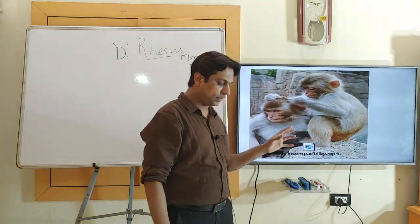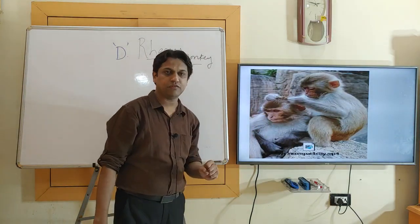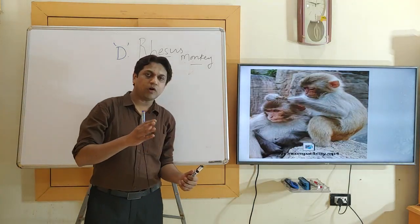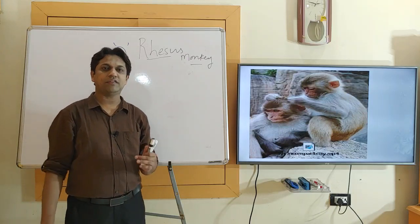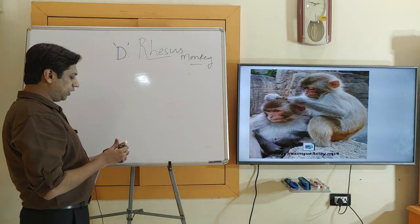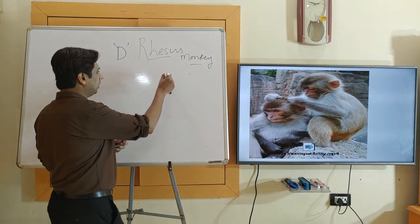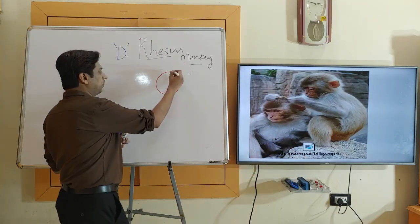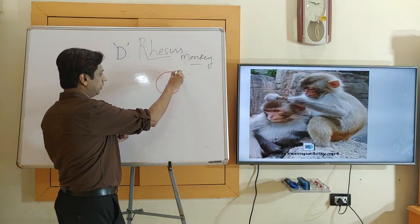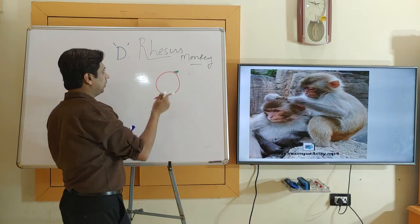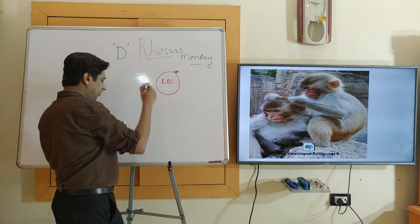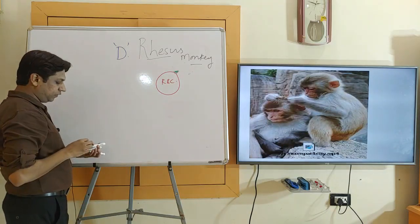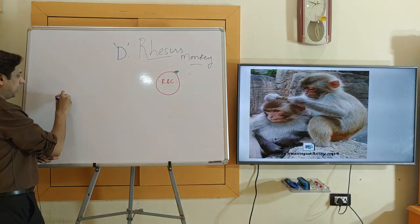Let us discuss how the RH antigen was discovered. In 1940, Landsteiner and Wiener first identified an antigen on the surface of RBCs from a rhesus monkey and named it the RH antigen. In their experiment, they transfused blood from the rhesus monkey into a lower animal, specifically a rabbit.